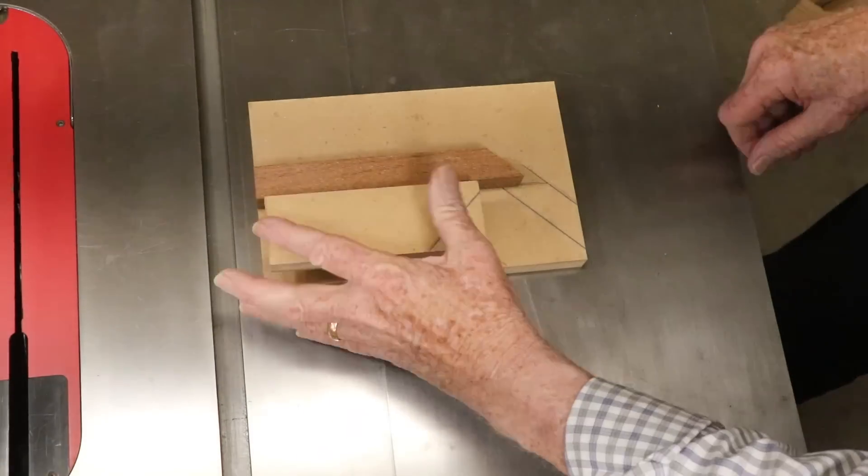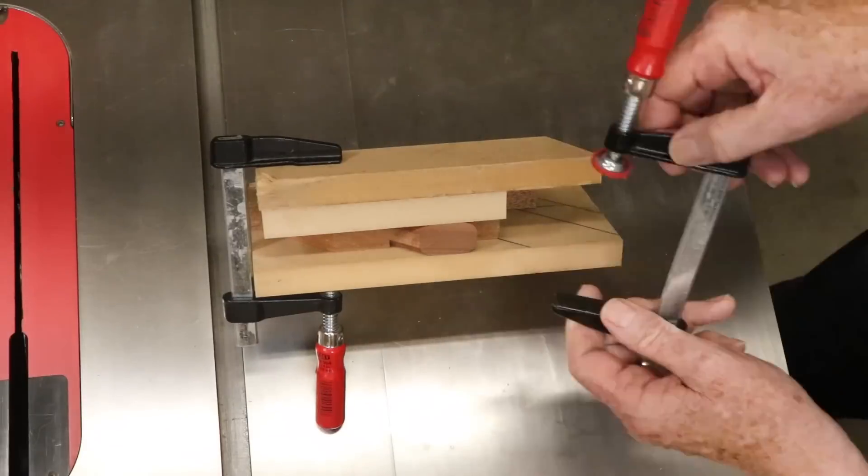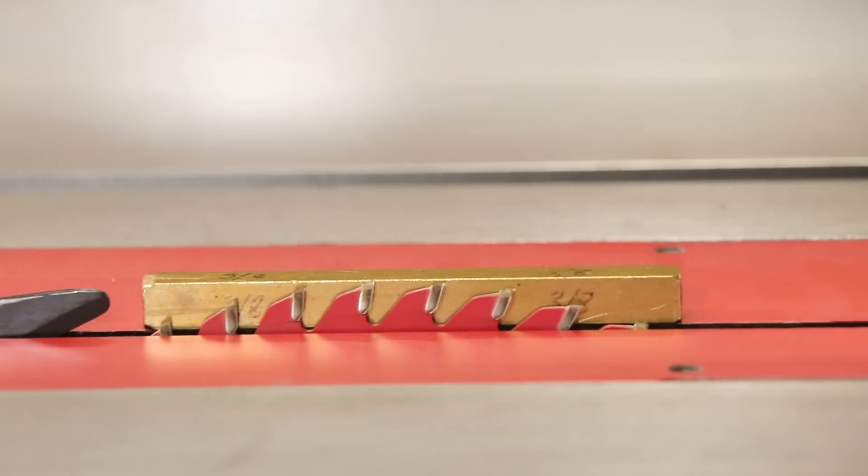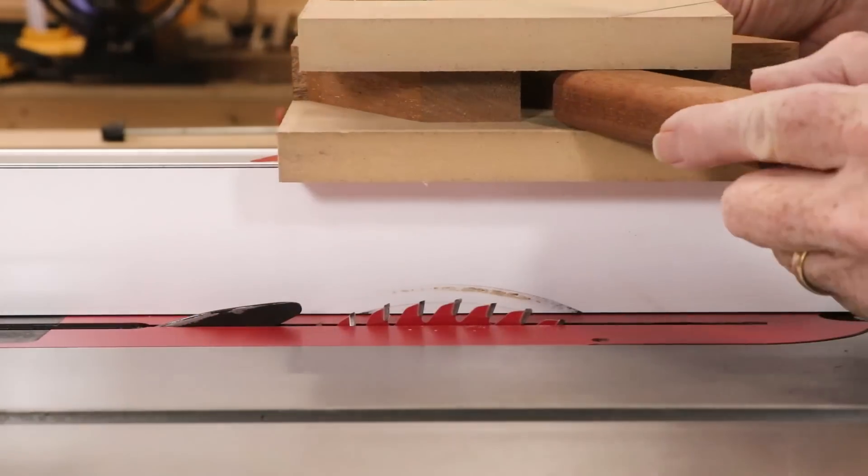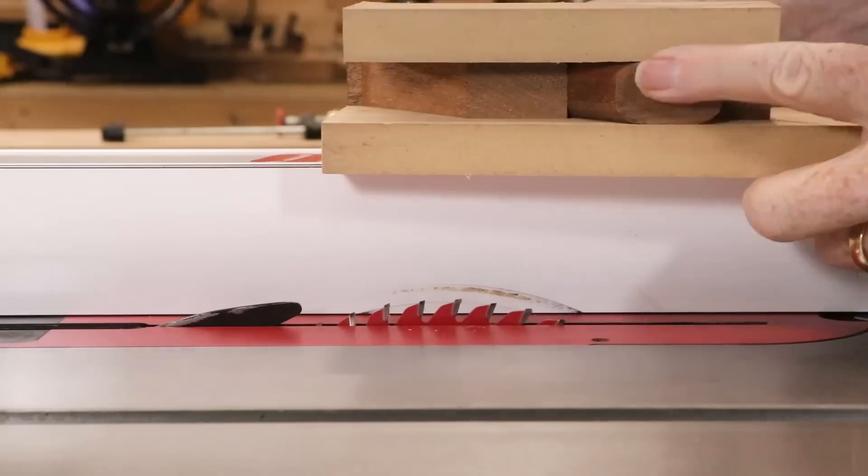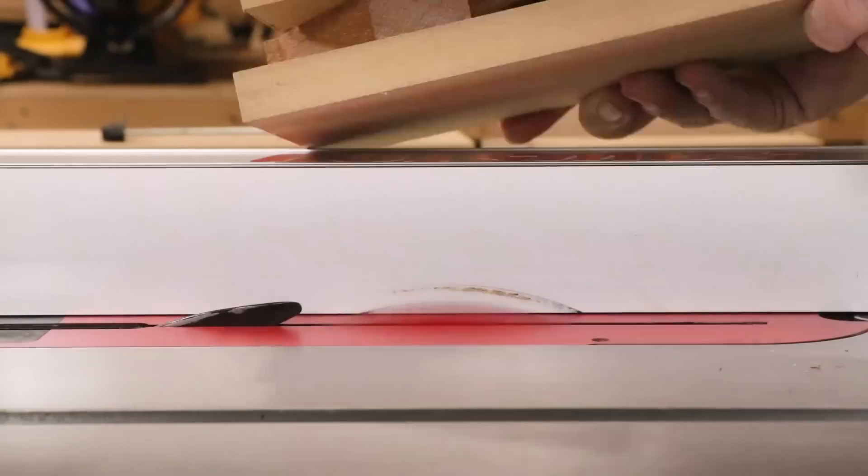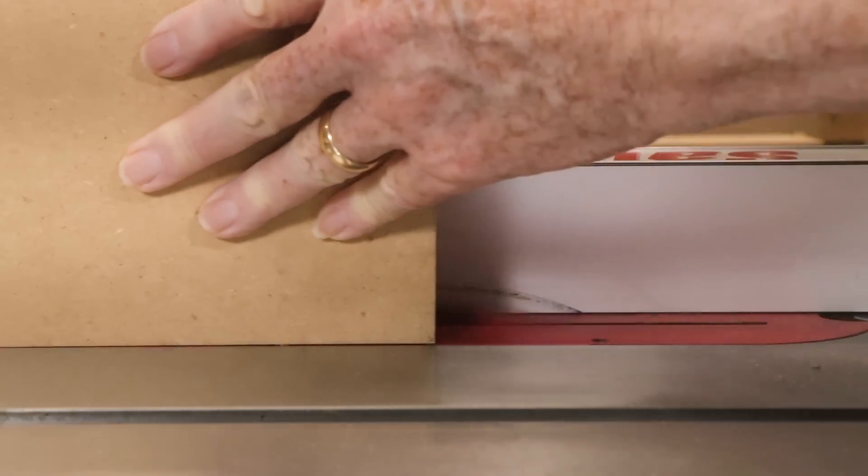This worked perfectly except for the fact that each tenon face required two passes through the saw, forcing me to reset the fence position repeatedly. The result was that the six tenons were all straight and exactly the same length, but varied ever so slightly in width. I labeled each mortise and each tenon so that each pair could be individually fitted.